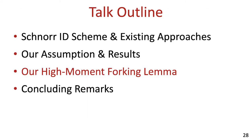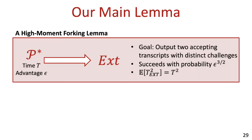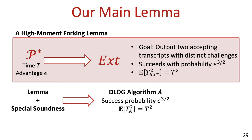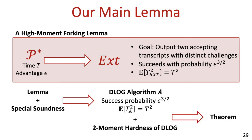We can now present our high-moment forking lemma. The lemma takes an impersonator P* that runs in time t and breaks Schnorr's ID scheme with probability epsilon, and converts it into an extractor whose goal is to output two valid transcripts with distinct challenges. We show that this extractor succeeds with probability roughly epsilon raised to the power of 3/2, and that the second moment of its running time is roughly t squared. We can then use this extractor together with the special soundness property of Schnorr's protocol to get a discrete log algorithm with similar parameters, and our bound for the security of Schnorr's ID scheme will follow from our assumption on the second moment hardness of the D-log problem.